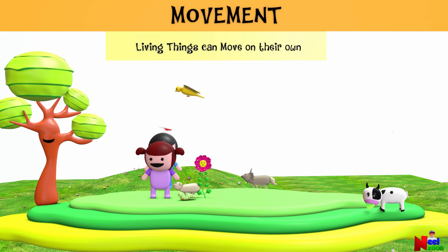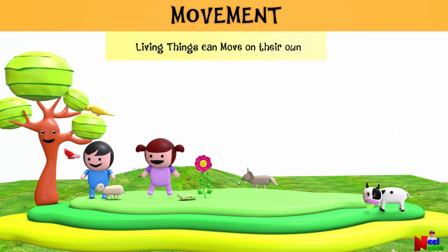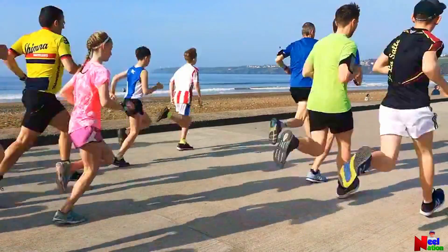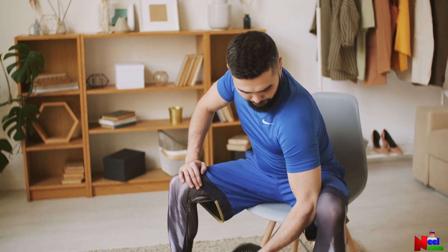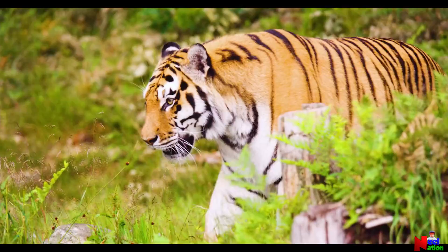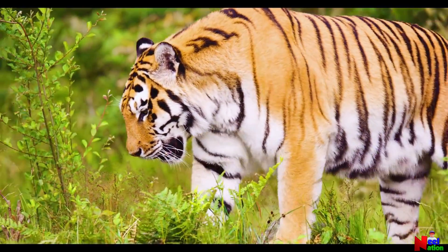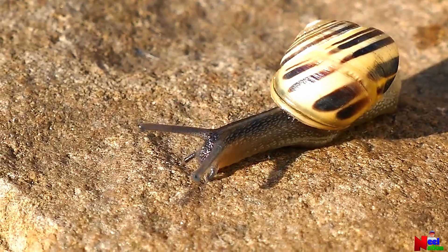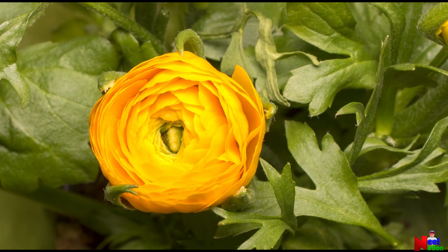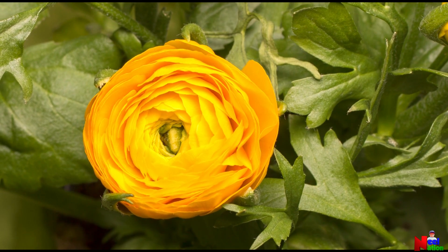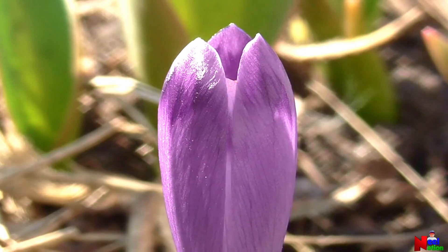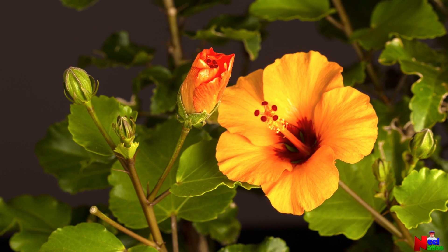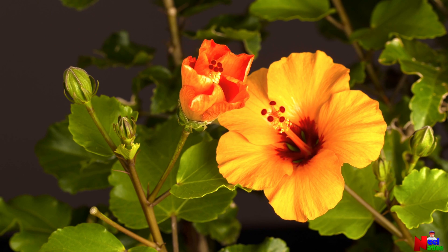Movement! Living things have the ability to move or change position on their own. People can move various parts of their bodies, from walking and running to moving their arms and fingers. Most animals can move from one place to another — they can walk, run, fly, swim, or crawl. While plants generally don't move from place to place, they can exhibit movement in different ways; for example, flowers may open and close, and some plants turn their leaves to face the sun.